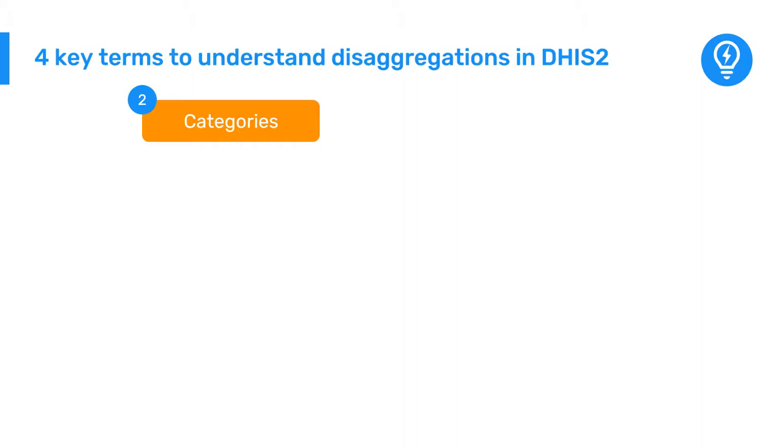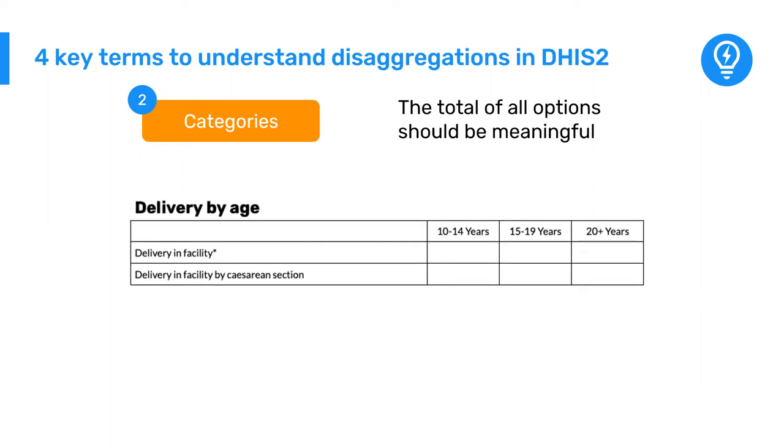There is an important principle to follow when creating categories. The total for all options that make up the category should be meaningful. This is because that total will appear in the analytics applications unless you add the disaggregations to it.